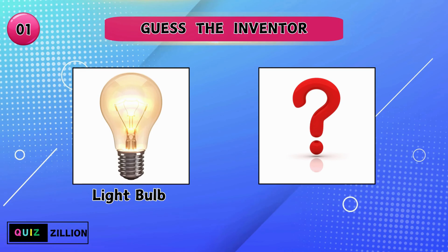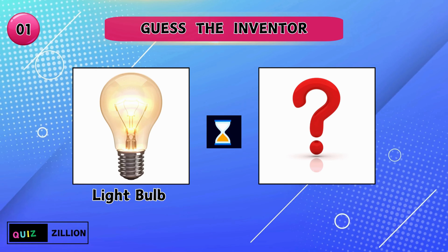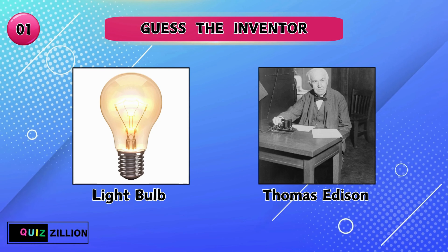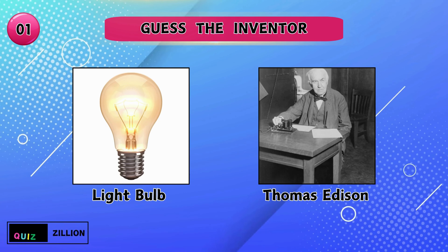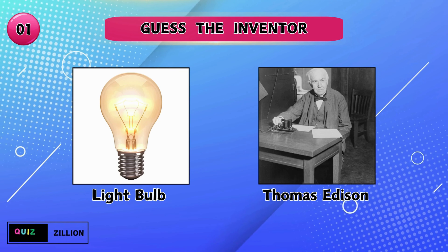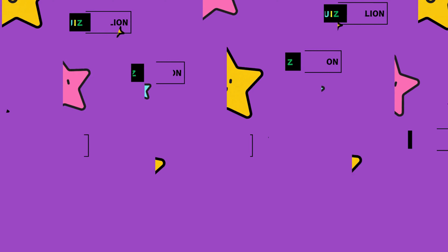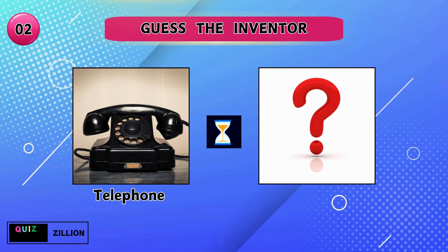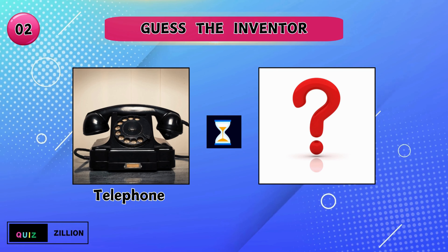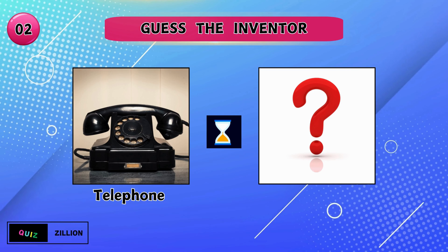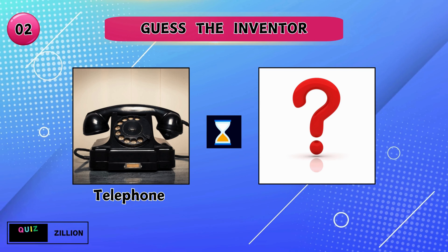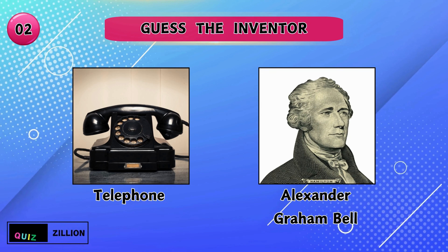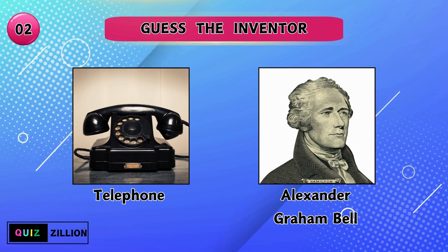The mastermind behind the light bulb is — the light bulb was discovered by Thomas Edison. Do you know who invented the telephone? Alexander Graham Bell found the telephone.